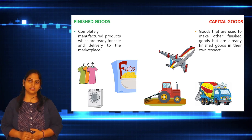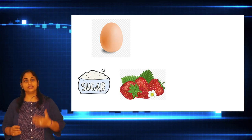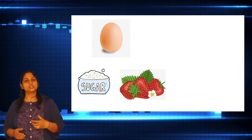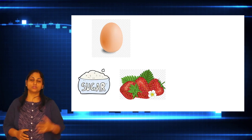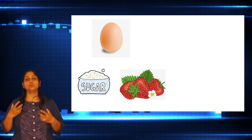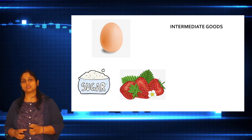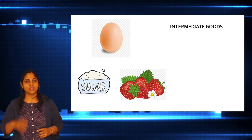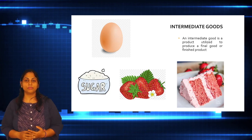Now let's look at the third category. Please look at the slide and tell me what kind of products these are. These products — eggs, sugar, strawberries — are in the third category. If I am taking them directly as a consumer, I make an omelette, or use sugar to make a cup of tea, or use strawberries to make a milkshake — so that is a finished product. But if I am a baker with a bakery, I take all these products, mix them, and make a strawberry cake to sell and generate profit.